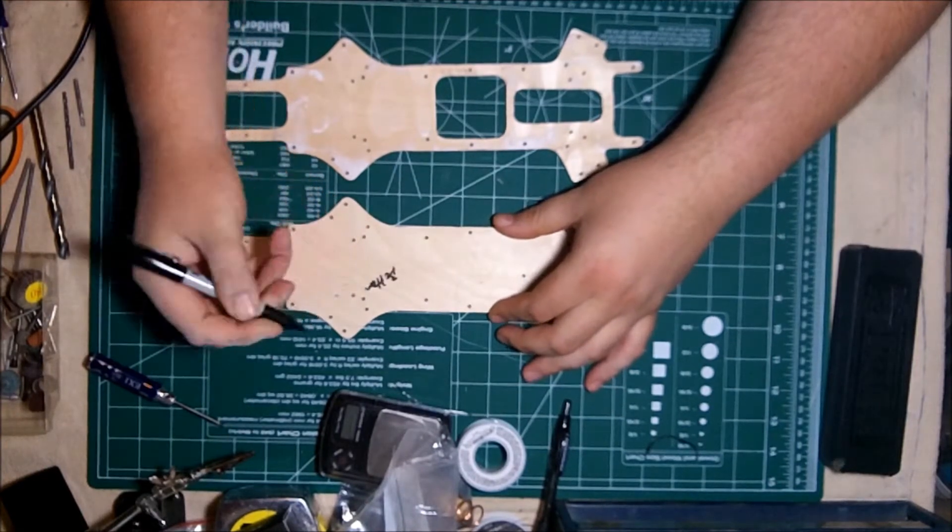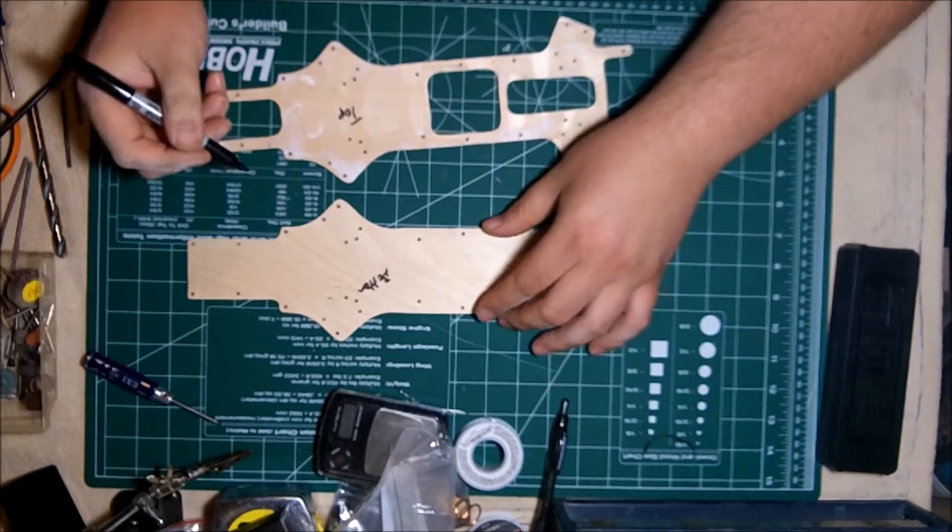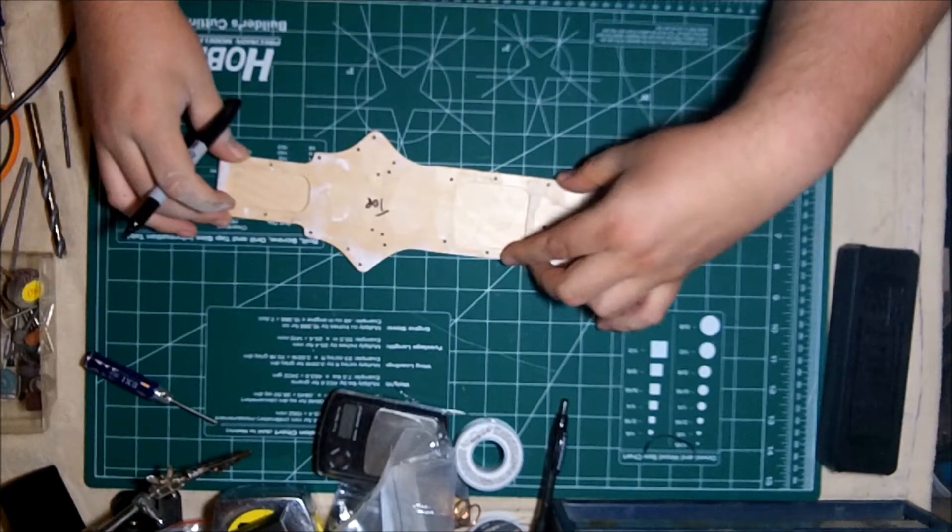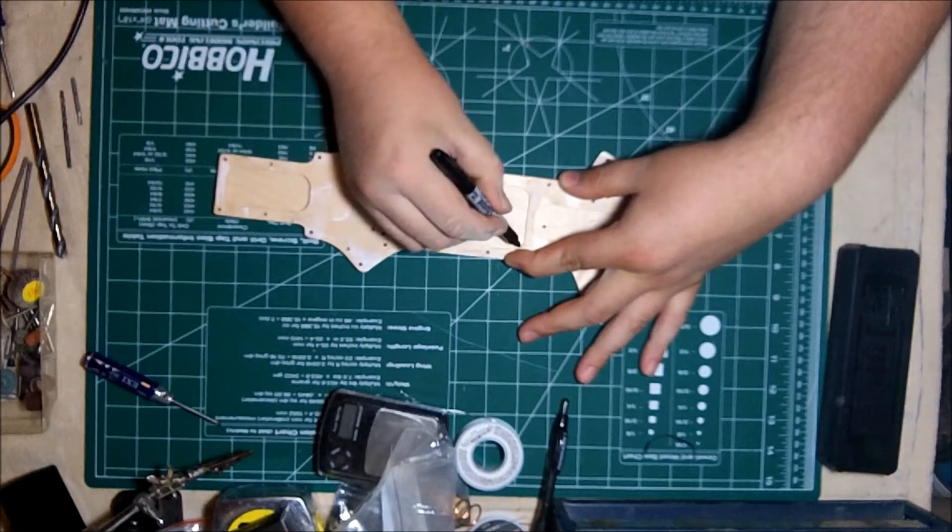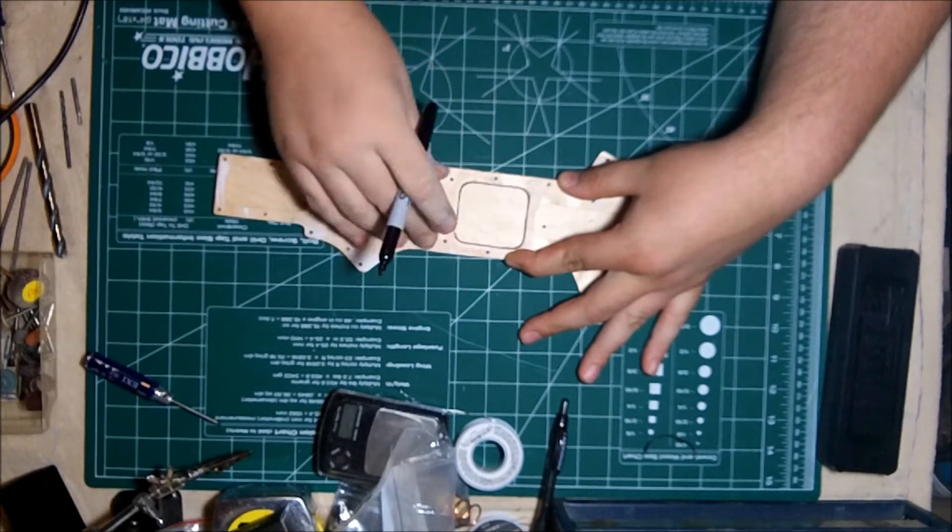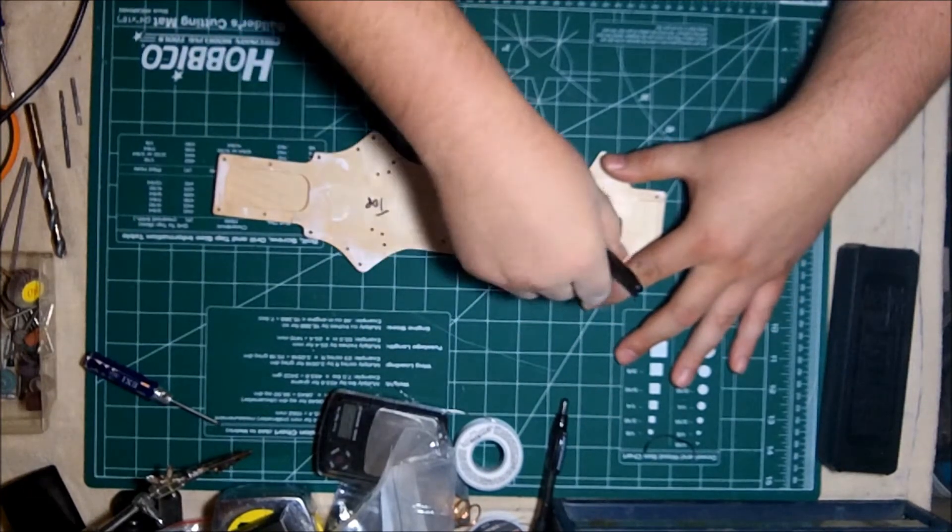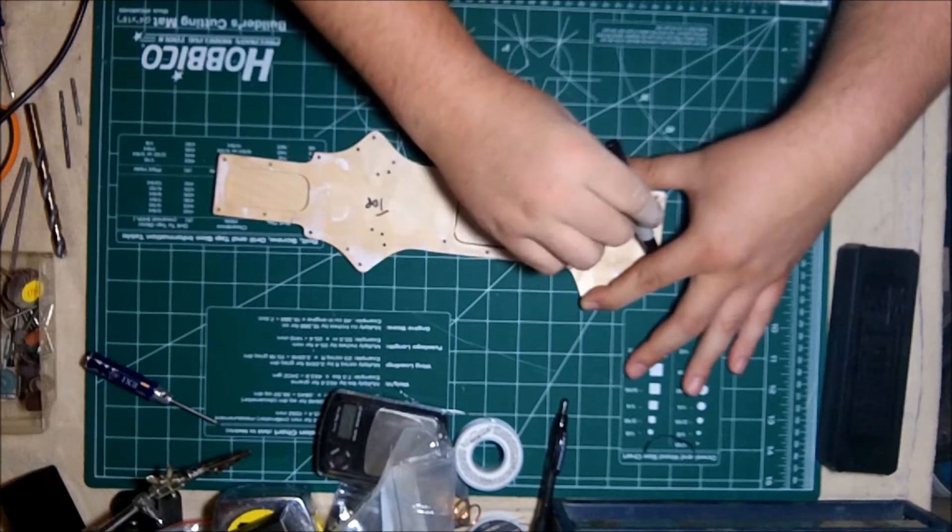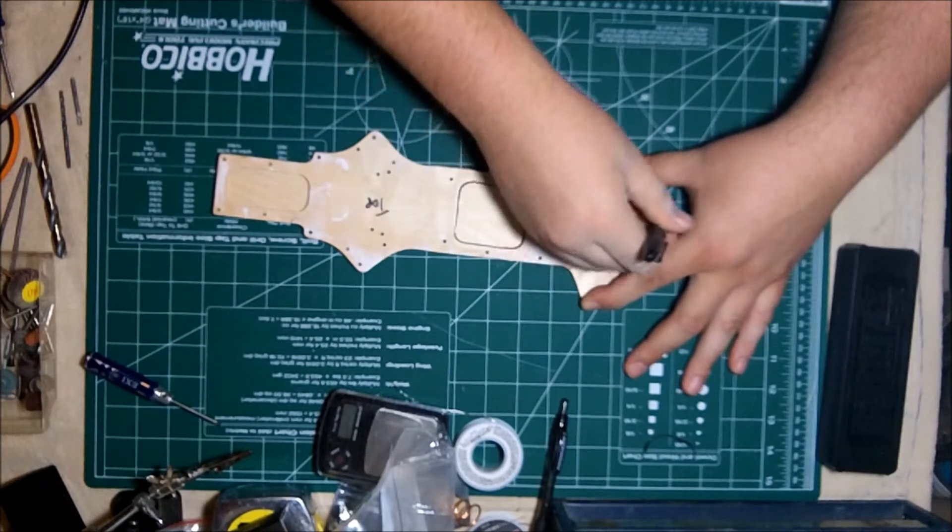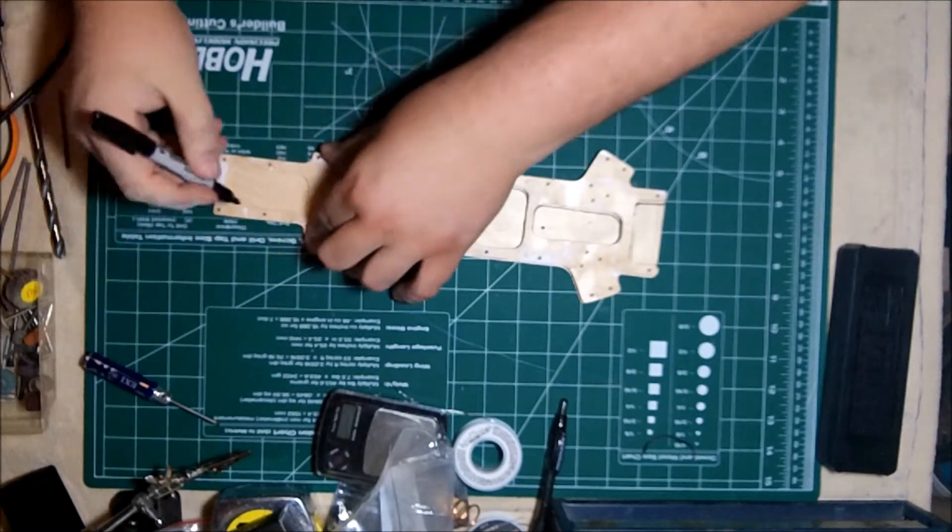So now I'm gonna go ahead and label it - this is my bottom, top. It's kind of important just because of the way the holes will line up. And then I'm gonna go ahead and trace everything out so that I know where the components kind of sit in relation to the cutouts on top. This will help me when I go ahead and start laying out speed controls and receiver and things of that nature. You don't have to do this but I like doing it just so I can tell what's going on.